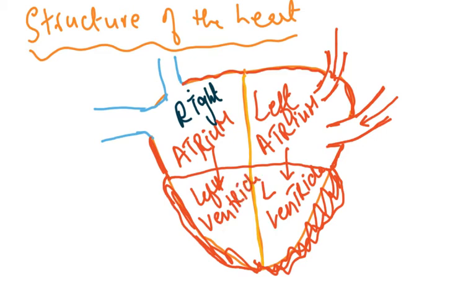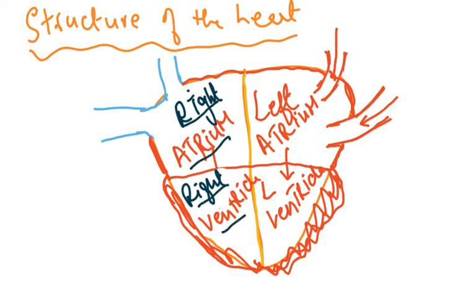Sorry, this is not the left ventricle — this is the right ventricle. So: right atrium, right ventricle on the right side. Then this is the left atrium and this is the left ventricle. The heart is divided into four chambers, and the middle septum divides it into the right and left sides.